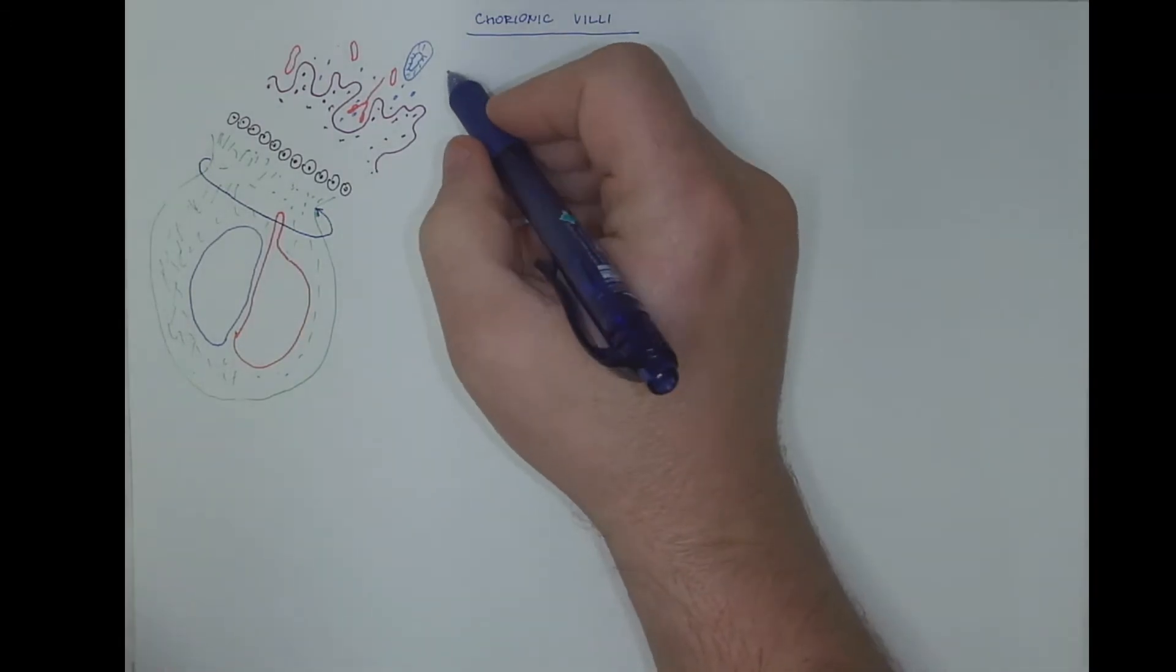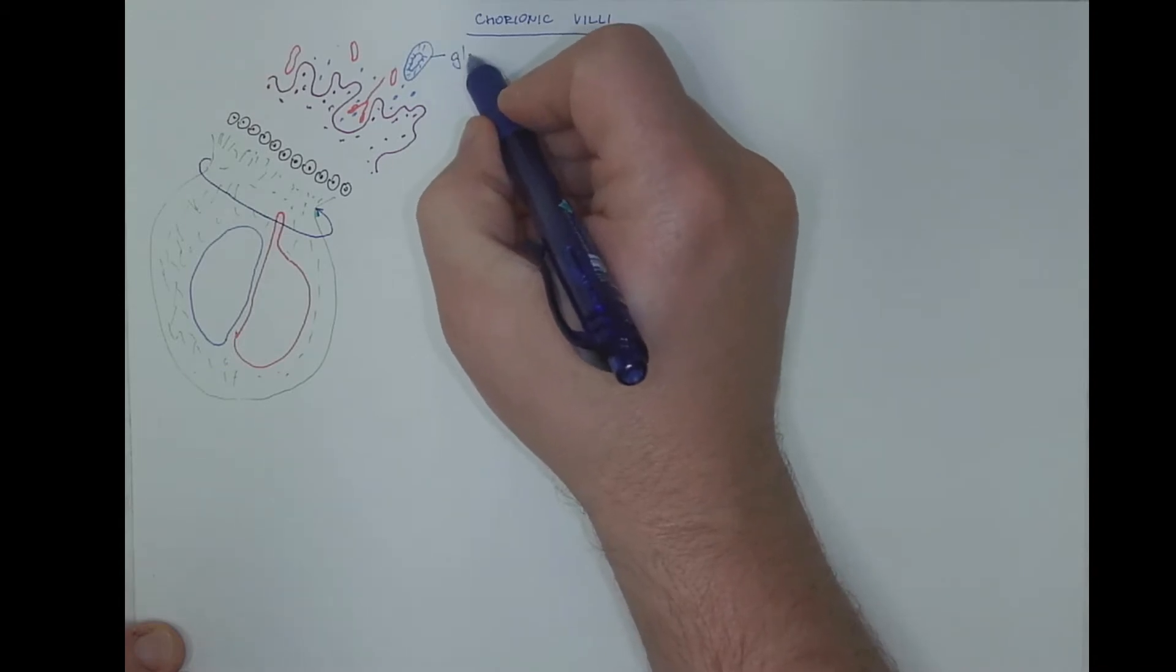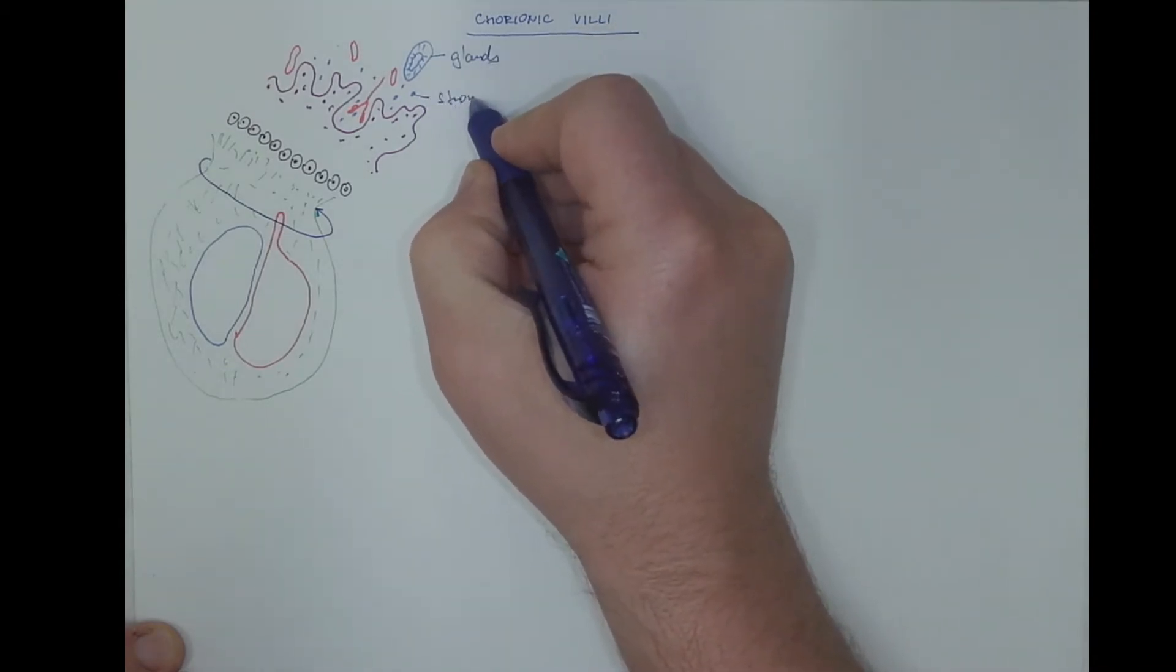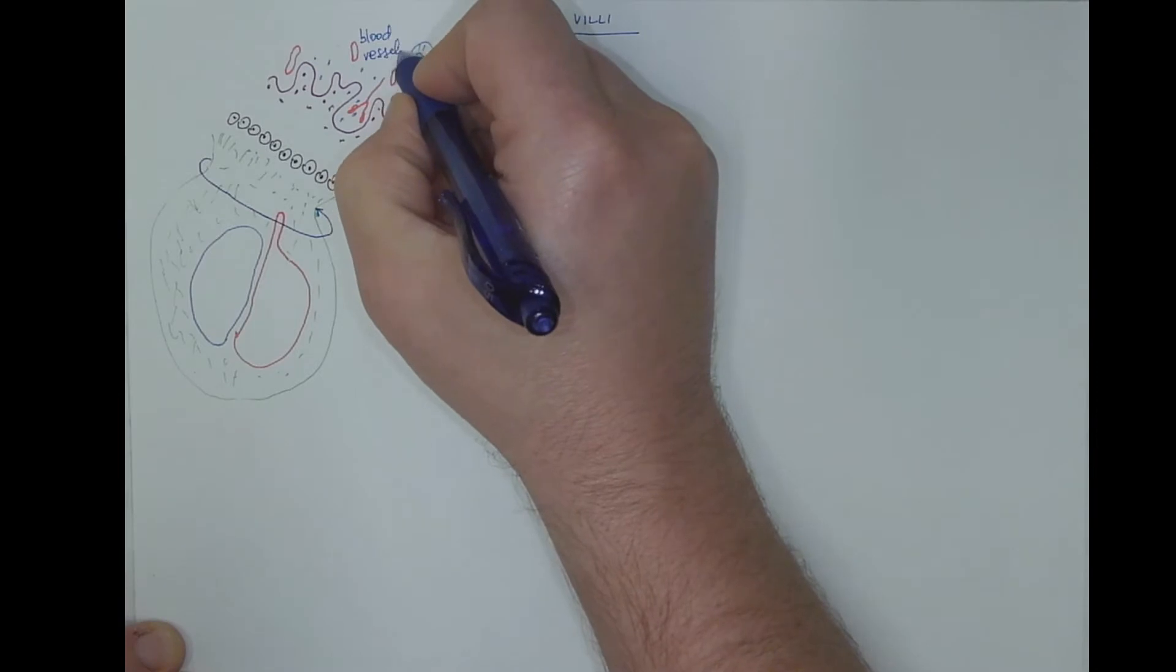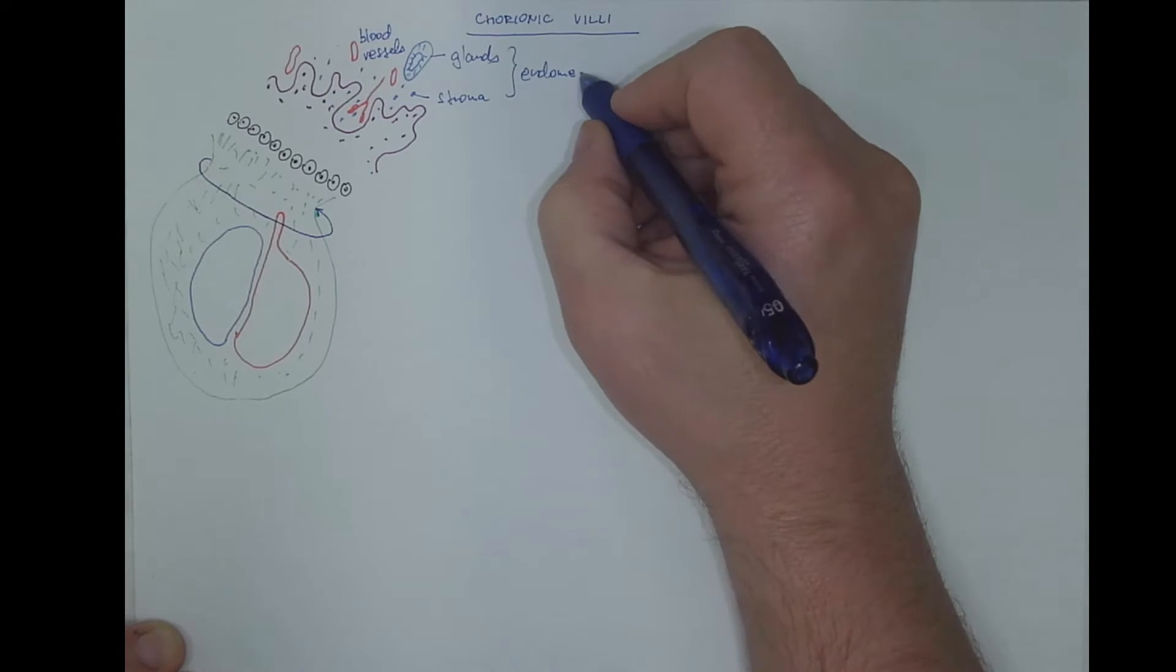So let's label the structures. These are glands, stroma cells, and blood vessels of the endometrium, of the uterine mucosa.